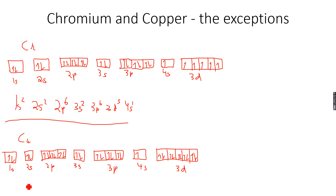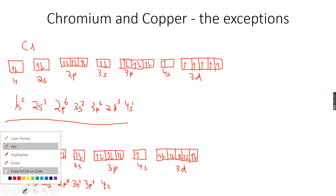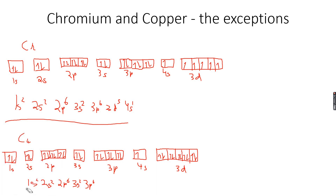That's why for copper the electronic configuration becomes 1s2, 2s2, 2p6, 3s2, 3p6 — we fill 3d later but write it before 4s — so 3d10 and 4s1. This is how we write the electronic configuration of copper. Chromium and copper are the only exceptions; remember that, and now we can move forward.